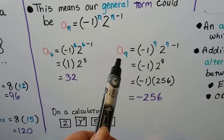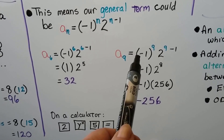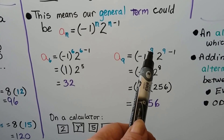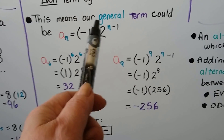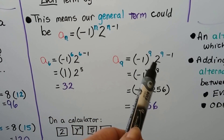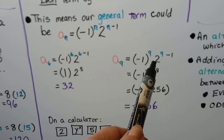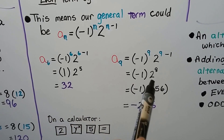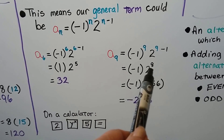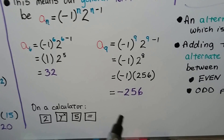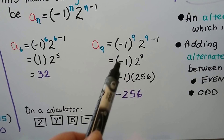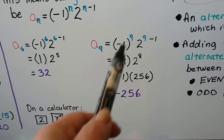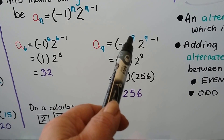We can find the ninth term. We do negative one to the ninth power, and then multiply it by two to the ninth minus one, which would be two to the eighth.